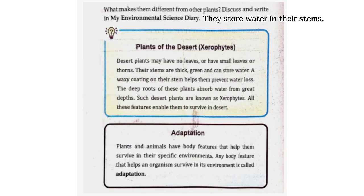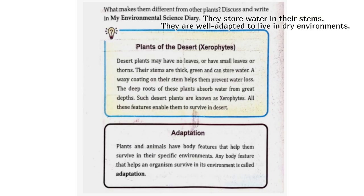They store water in their stems and are well adapted to live in dry environments. Desert plants, known as xerophytes, may have no leaves, or have small leaves or thorns. Their stems are thick, green and can store water. A waxy coating on their stem helps prevent water loss. The deep roots of these plants absorb water from great depths. Such features enable them to survive in the desert.